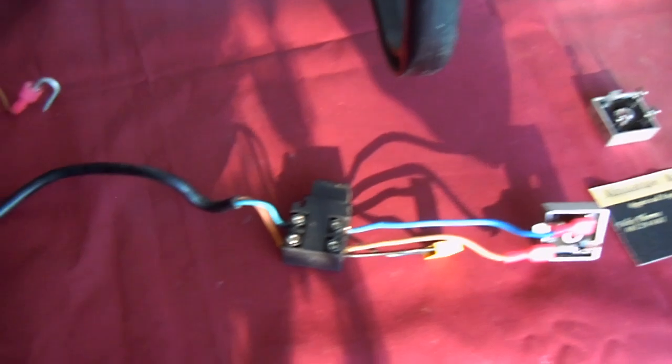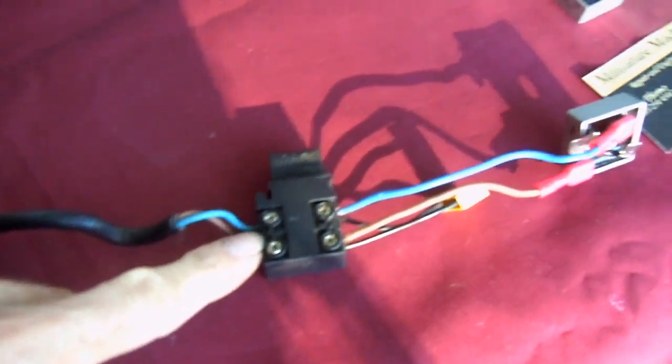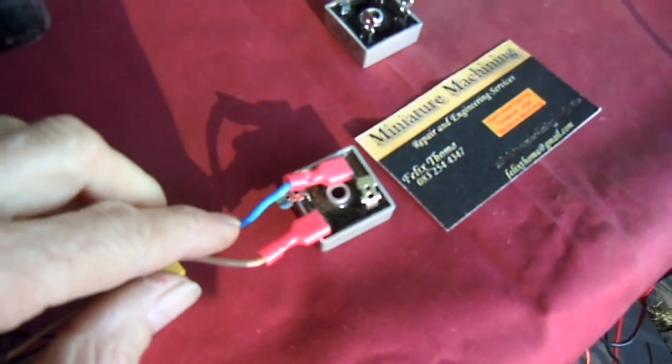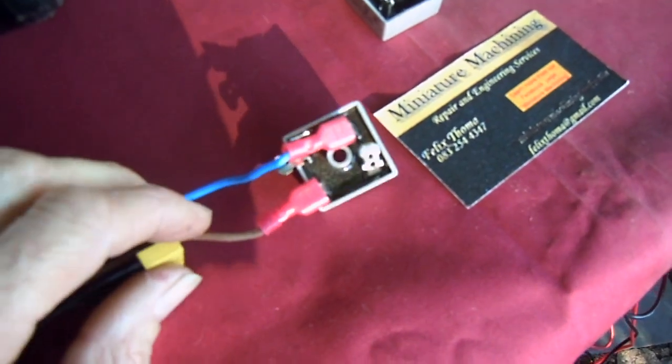Basically here we can see that the power goes from the plug to the switch and then it runs through this bridge rectifier. The one that's on here now is faulty at the moment.